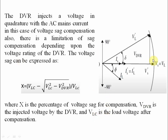With the phasor diagram, everything will be clear. Vs is the source-side voltage, Vl is the load-side voltage. The load current Il is lagging Vs (or Vl) by phase angle phi. Vl-dash is leading Vl by angle delta, and the supply current Is is in phase with Vs.